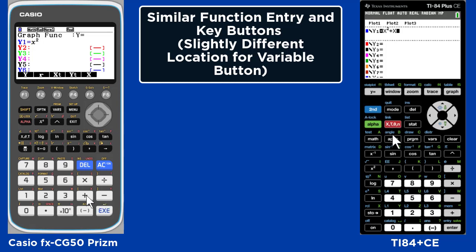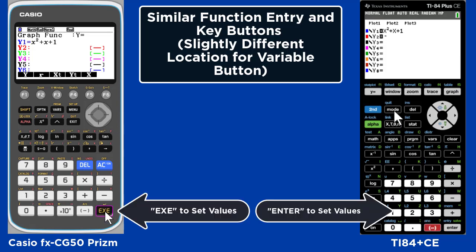You'll notice entry of the functions is very similar, with the main difference being where the variable key is located. When you want to set functions or values, you hit Execute on the Casio and Enter on the TI.